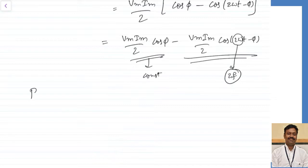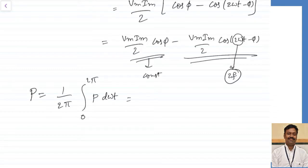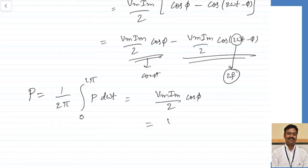To calculate the average power, I integrate p over a full cycle from 0 to 2π. The second term averages to zero because it oscillates at double the frequency. So the average power becomes (Vmax · Imax / 2) · cos(φ), which I can write as (Vmax/√2) · (Imax/√2) · cos(φ) = Vrms · Irms · cos(φ).